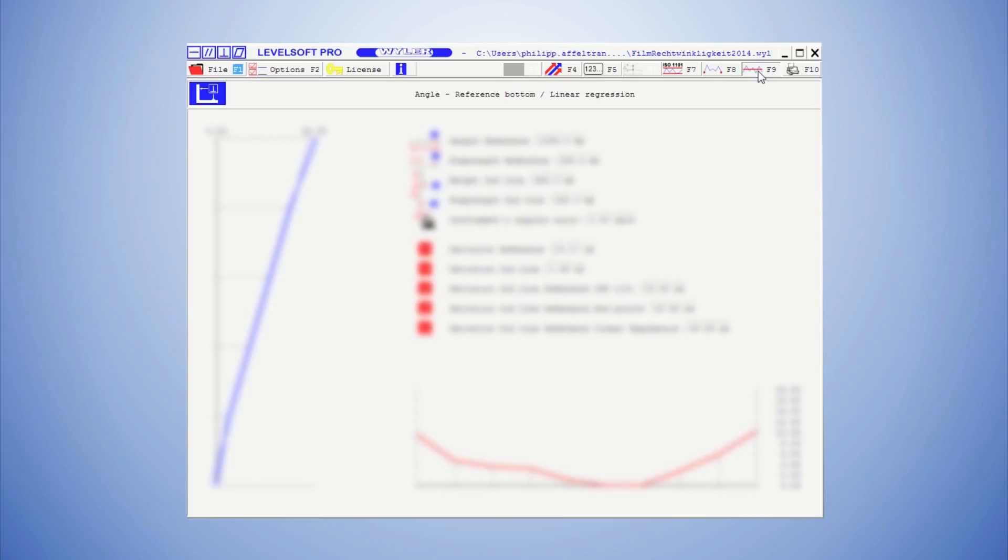I would like to refer to our video on straightness, where these three methods are explained in more detail. In our example, we choose the adjustment according to endpoints. We therefore press F8.